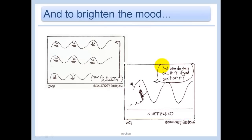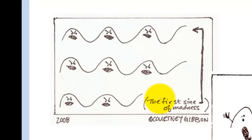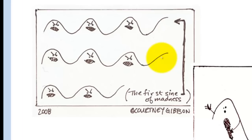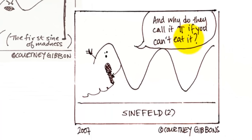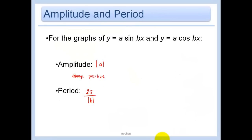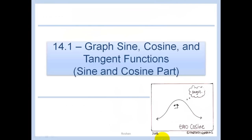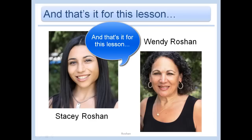To conclude with some humor: the first sign of madness — our sine graphs started at (0, 0) and looked periodic. And why do they call it pi if you can't eat it? Go back to the very first comic and you'll see why he was 'emo cosine' — the cosine graph starts up at 1 and comes down, looking something like a sad face with the axis right through the middle. Beautiful emo cosine. That's it for this lesson!